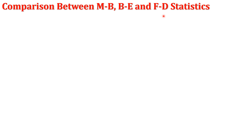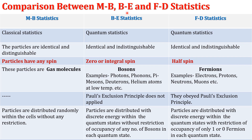Now, what are the important features of Maxwell-Boltzmann statistic, Bose-Einstein statistic and Fermi-Dirac statistic that we compare here? In Maxwell-Boltzmann statistic, the particles like gas molecules are identical and distinguishable, while in Bose-Einstein statistic the particles are again identical but indistinguishable. Similarly in Fermi-Dirac statistic, particles are identical and indistinguishable.